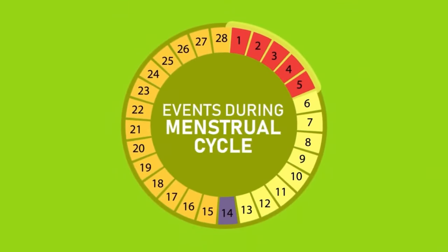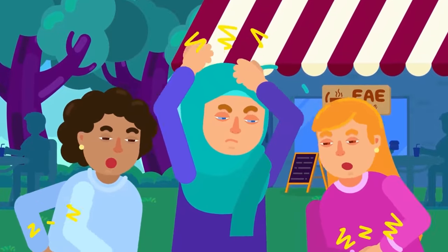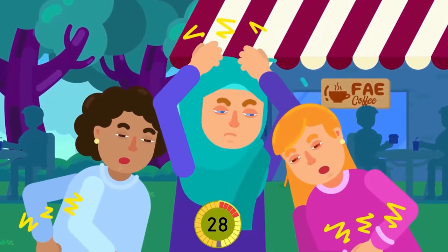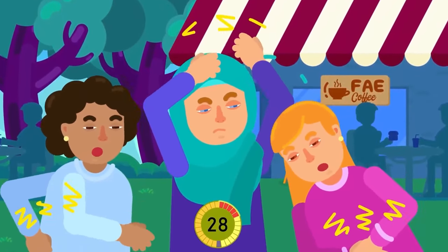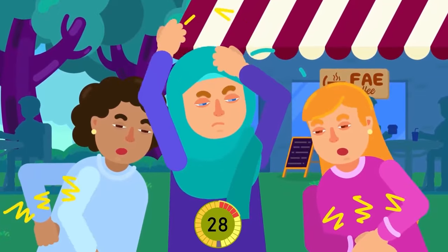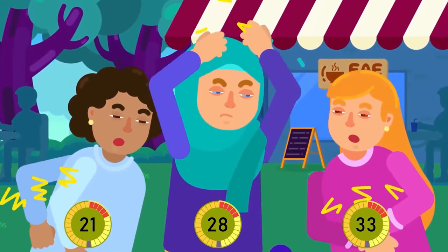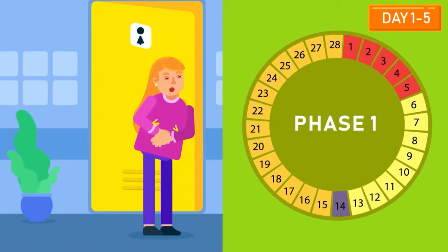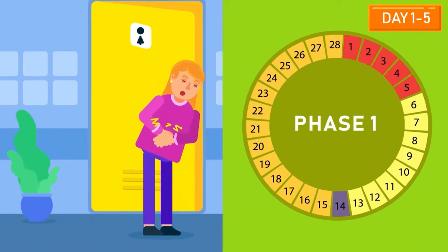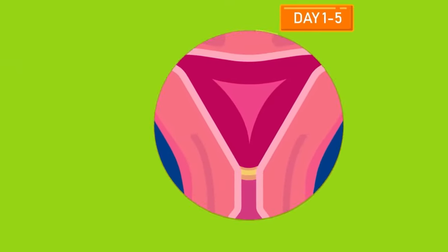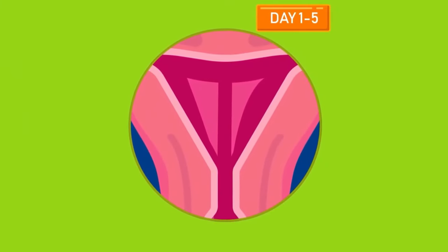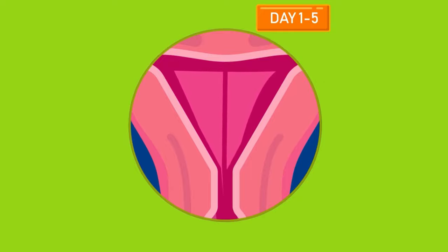The menstrual cycle normally spans over 28 days. There is a natural variation in the length of this cycle, and it can range from 21 to 33 days. Day 1 to 5 is Phase 1: the first day of menstruation is day 1 of the menstrual cycle. The endometrium breaks down and flows out of the body. Mostly, the first 5 days are characterized by heavy bleeding.